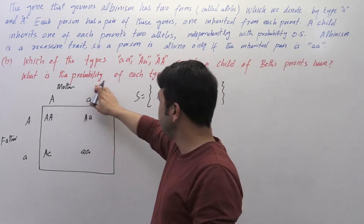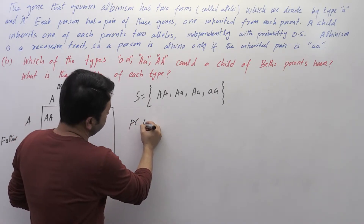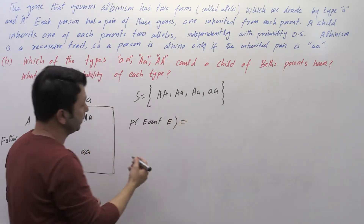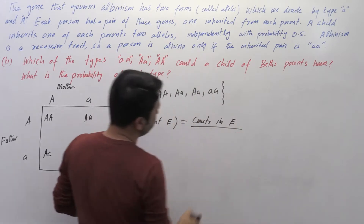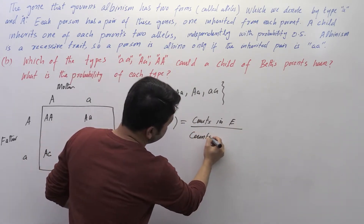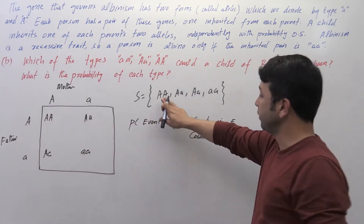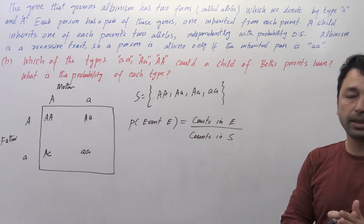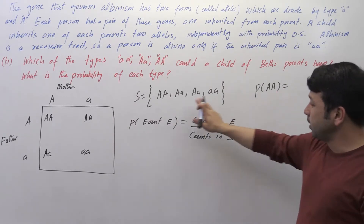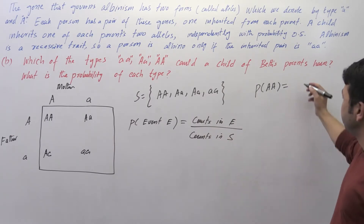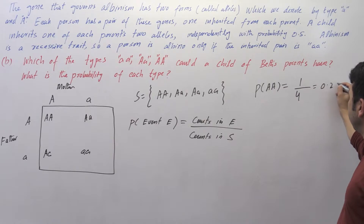The second part asks: what is the probability of each type? We define probability of event E as the count of outcomes for event E divided by the total number of outcomes in sample space S. In this case, we have four sample points total and three distinct types: both capital 'AA', capital 'A' small 'a', and both small 'aa'. For both capital 'AA', there is only one sample point, so its probability is 1 divided by 4, which equals 0.25.